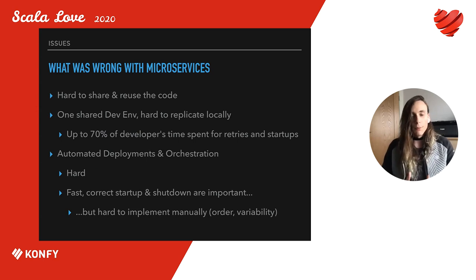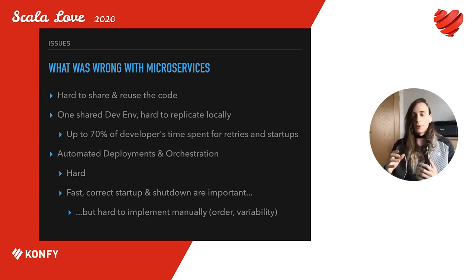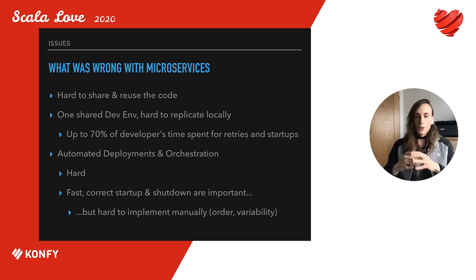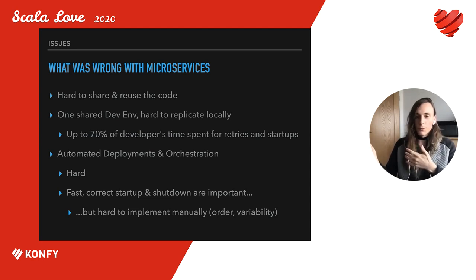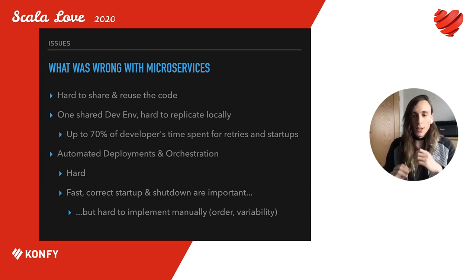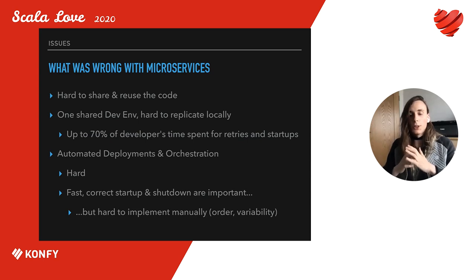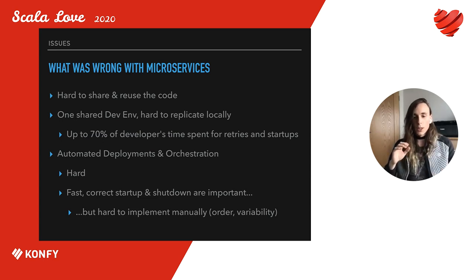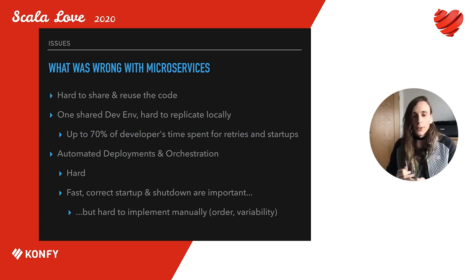What was wrong with the microservices? First of all, it's hard to share and reuse code with multiple repositories. Because of that, multiple copies of the same code appeared in different repositories — it was easier to copy and paste rather than spend time moving code snippets into a shared library, publishing it locally, waiting for CI to build, and for the artifact to appear in the repository. The company had one shared dev environment for all teams because it was hard to set up the same environment on your own machine — hard to run dozens of Java processes for all the microservices on your laptop.